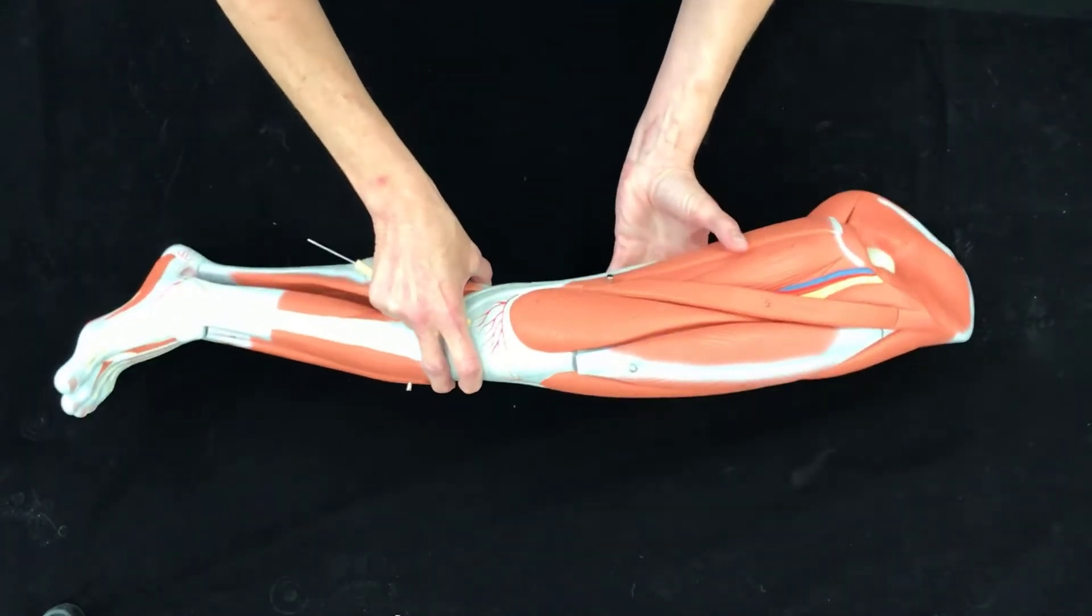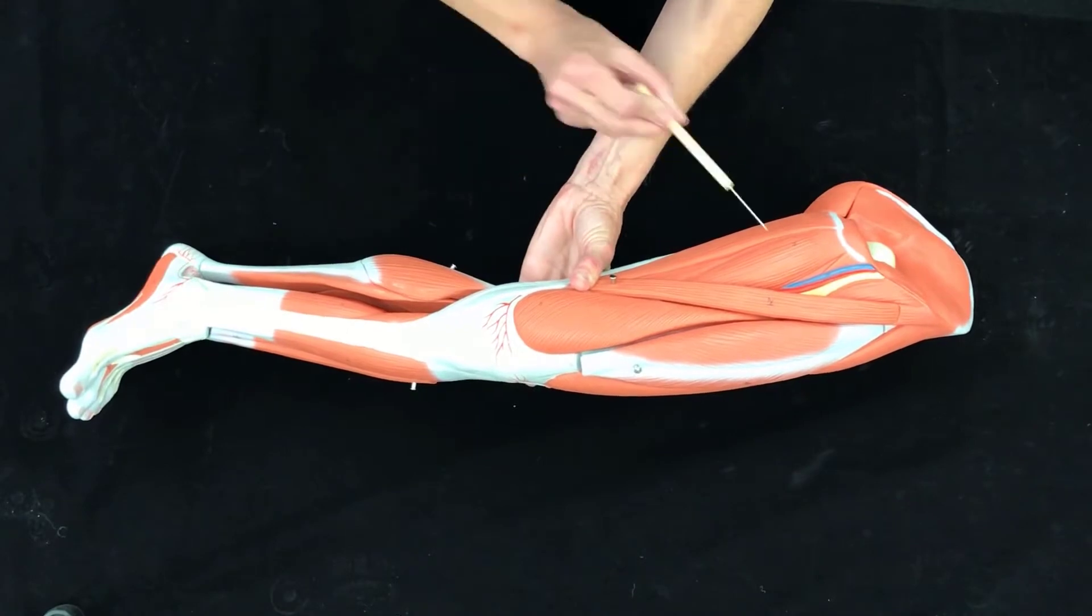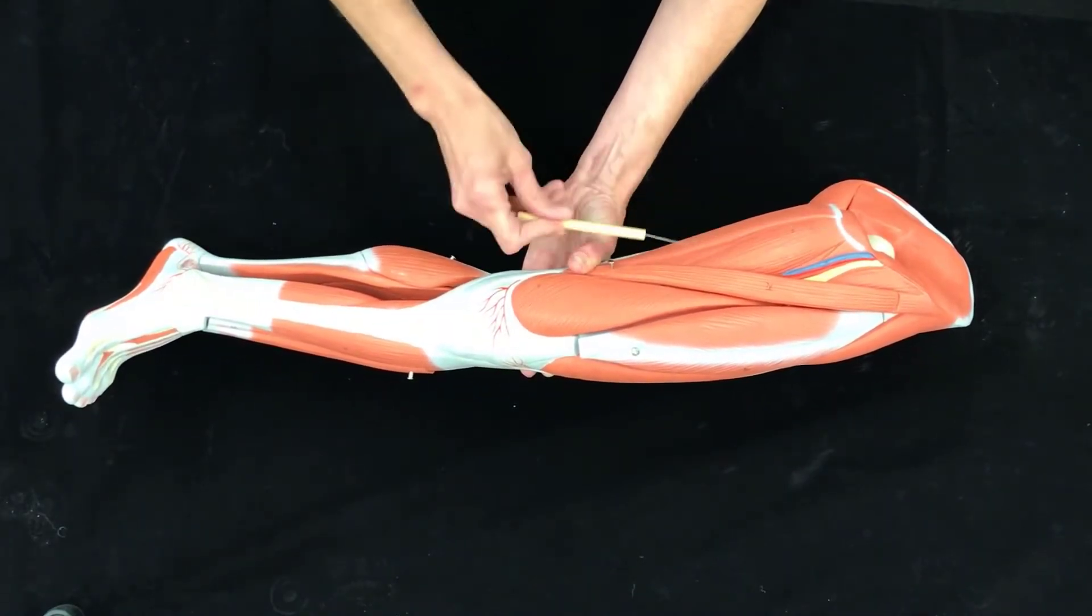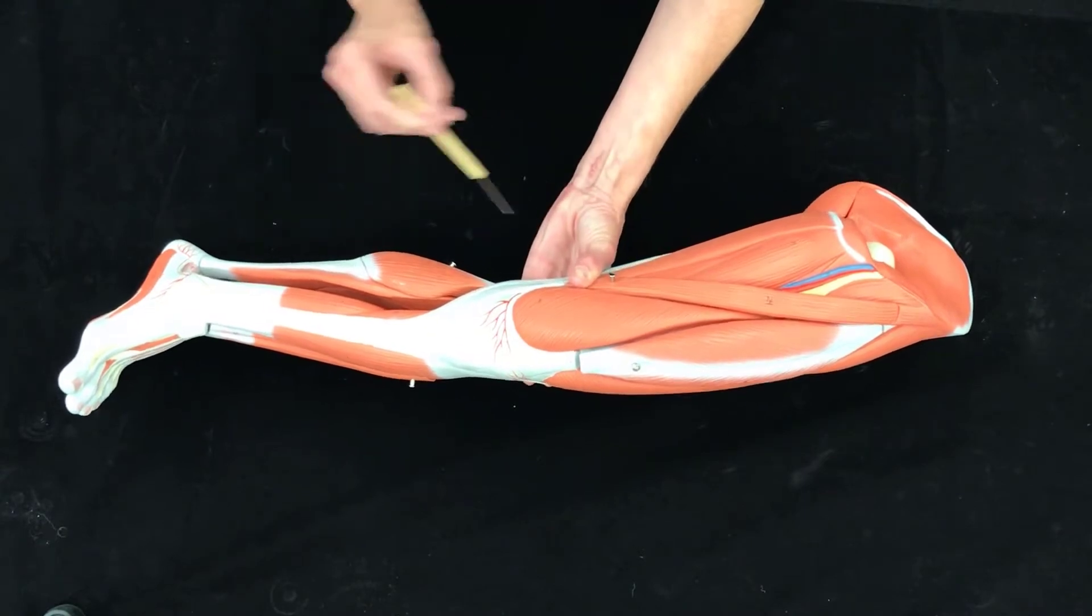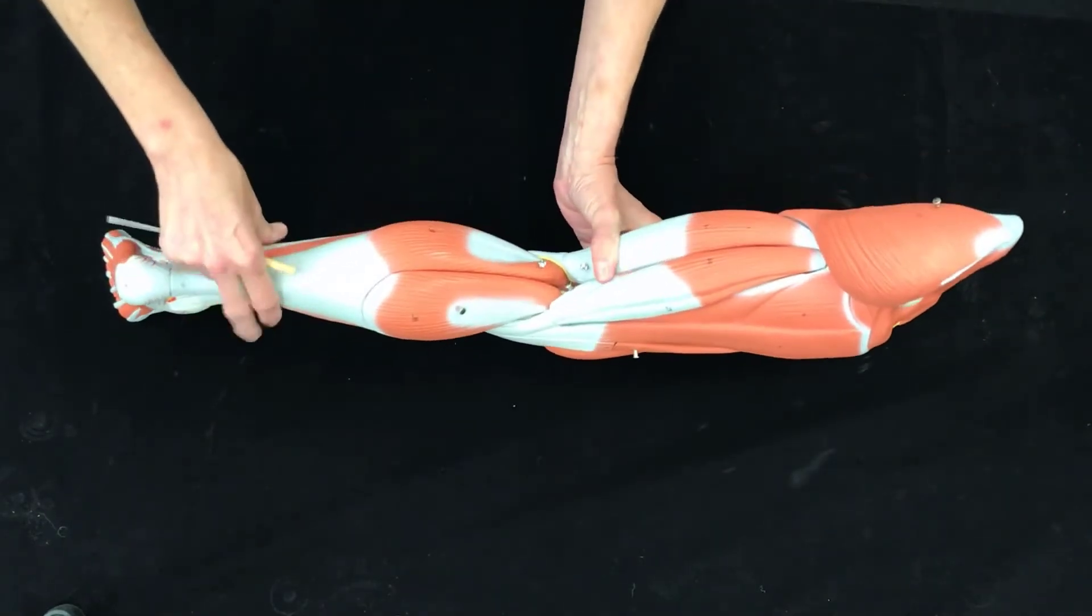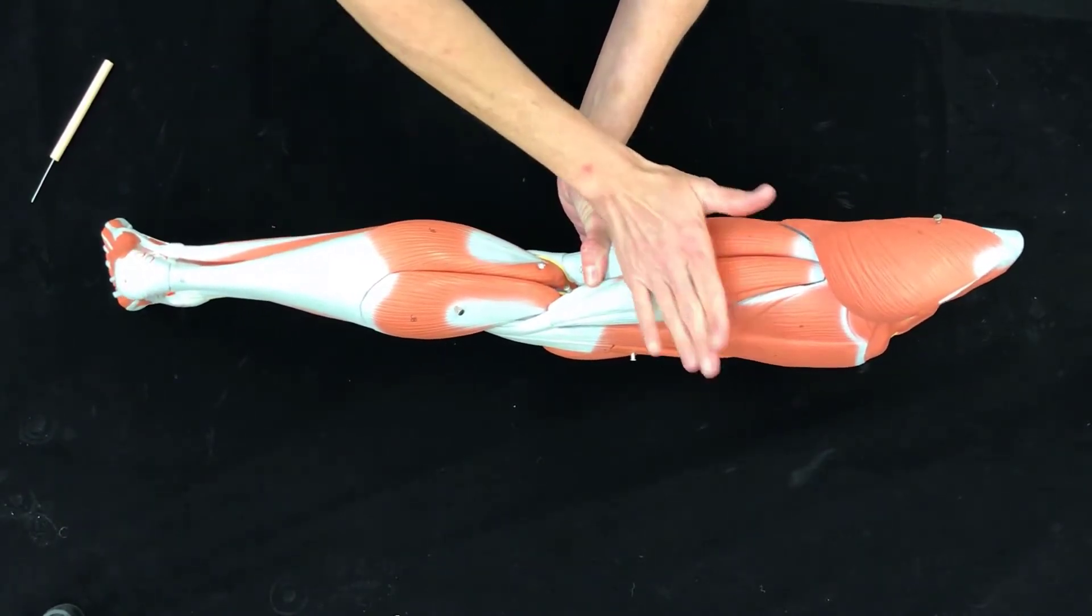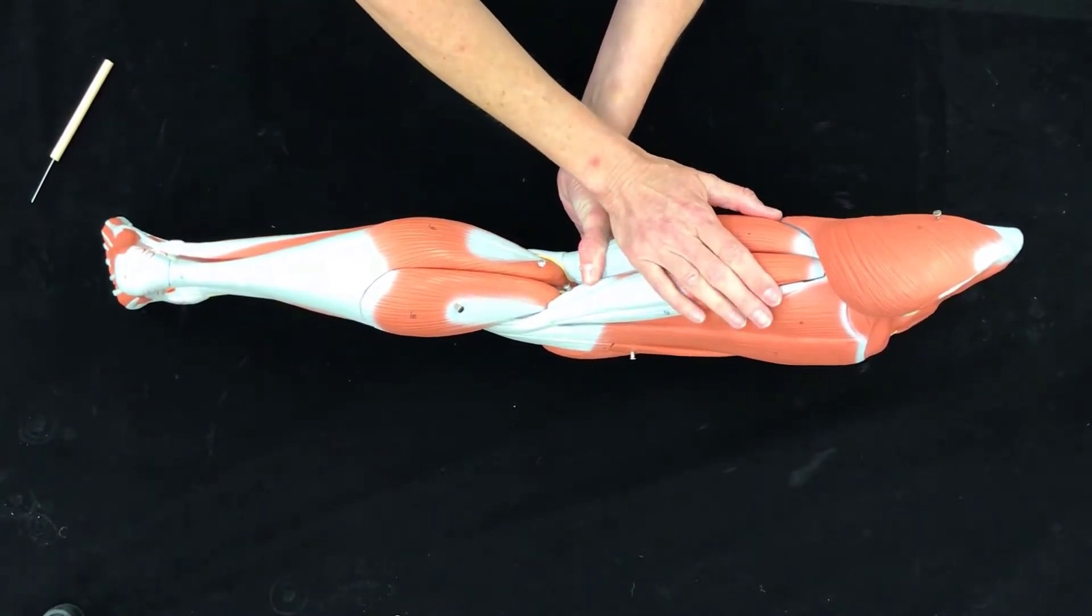Then we can turn it on its side and these inner muscles are called the adductor muscle group. Then all the way over, this group on the back of your thighs is called the hamstring muscle group.